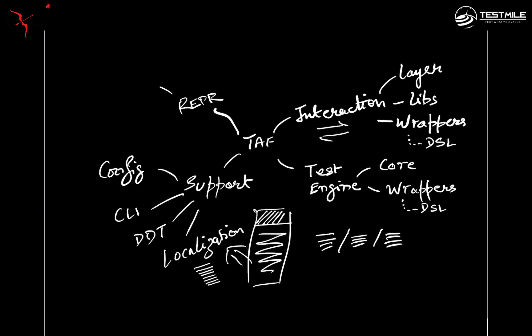One of the more frequent representations is a test written in a programming language. The test could be a raw test directly talking to the interaction libraries — for example, in case of Selenium, interacting at a browser layer, launching a particular URL, and then interacting with web elements. Or it could be at a higher level abstracted layer, such as using a page object model. Further down the line, maybe you are actually talking in terms of business flows and not even in terms of pages.